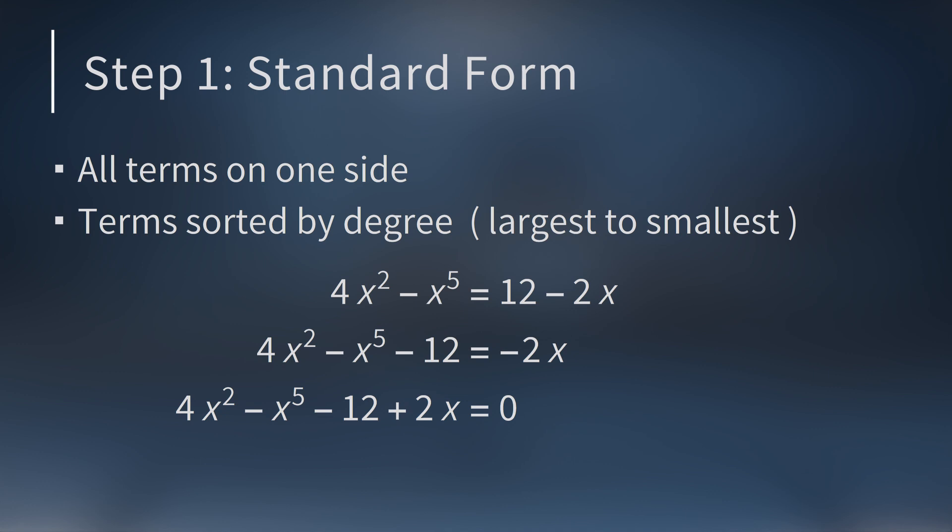Remember, you write polynomials from largest degree to smallest degree. Once we do this, the largest exponent is 5, then 2, then 1, which you don't write, and then the constant term -12, which has degree 0.